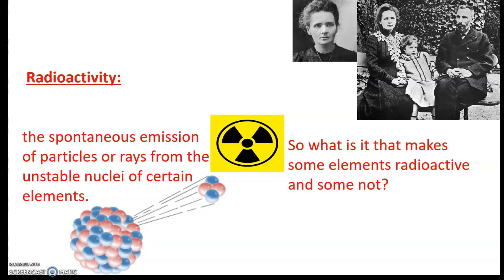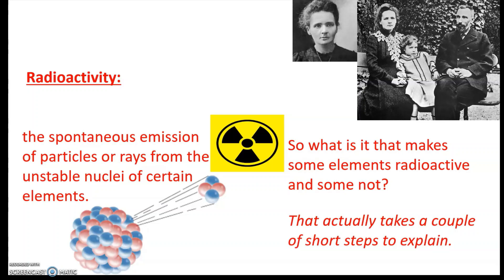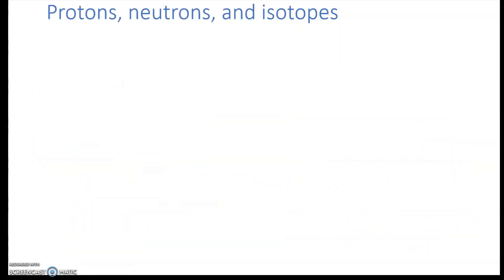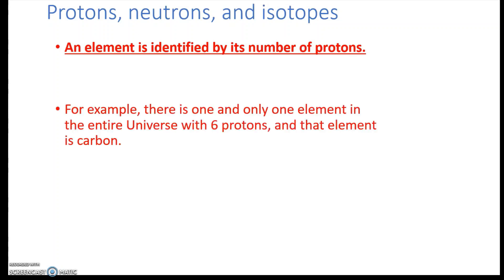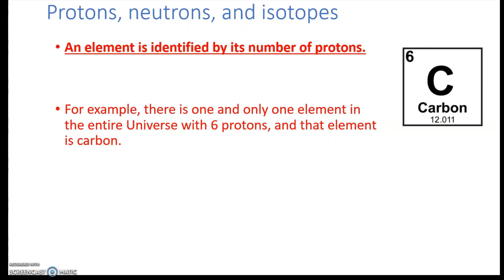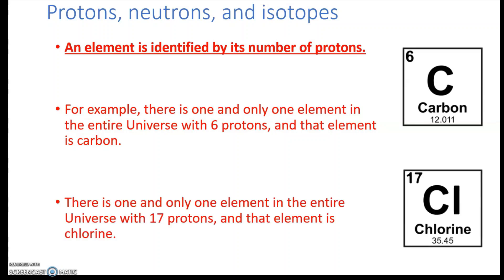What makes some elements radioactive and others not? It has to do with protons and neutrons. An element is identified by its number of protons. There is one and only one element in the entire universe with six protons — that's carbon — and one and only one with 17 protons — that's chlorine. Each element has a unique number of protons.